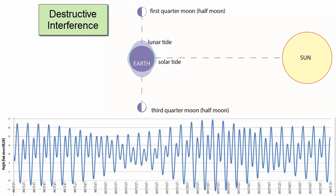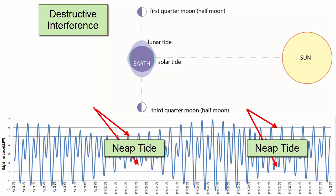When the two bulges are out of phase, which happens when we see half moons, the interference is destructive and the tidal range is at its lowest. The lows aren't so low, the highs aren't so high, neap tides.